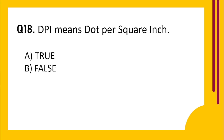Question number 18. DPI means dot per square inch. Option A: True. Option B: False.